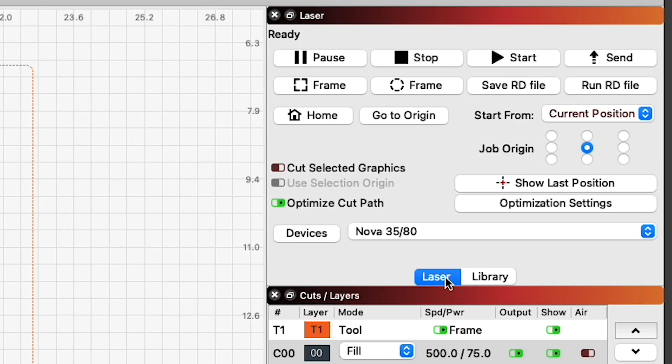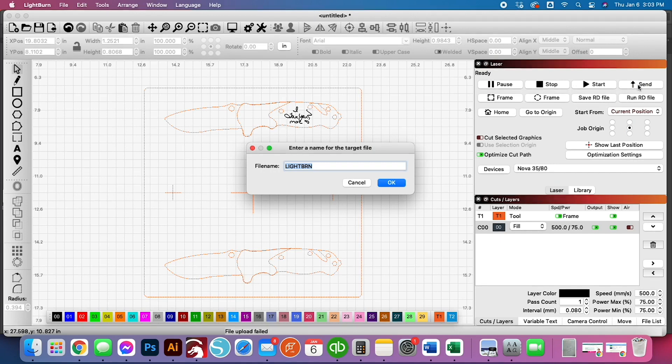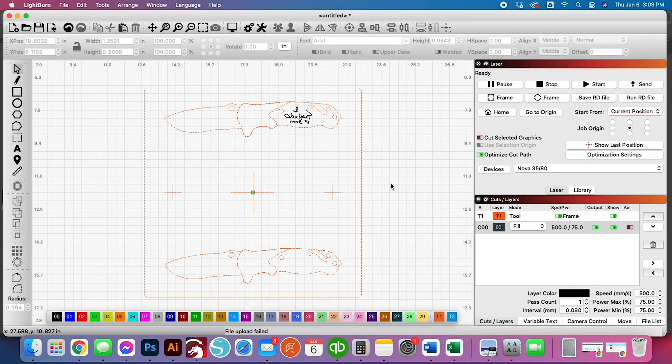All we have to do now is just send this file to the laser. We're going to go up here to the laser and click on send. We're just going to give this a name here for knife and press OK. File already exists. We're going to overwrite that in our laser and that should already be sent to the laser and it's ready to engrave.